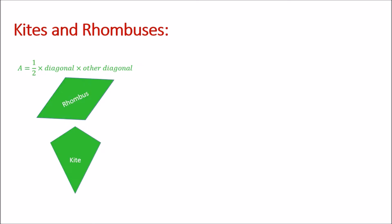In this video you'll learn how to use the formula for the area of a kite or rhombus. Here we have a rhombus and a kite. A rhombus is just a quadrilateral that has four sides that all have the same length as each other.